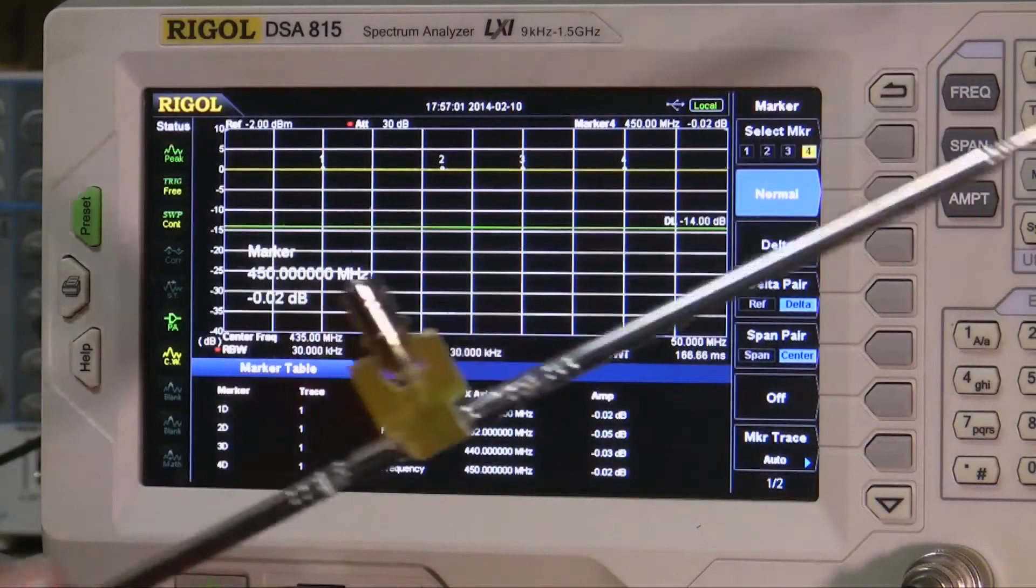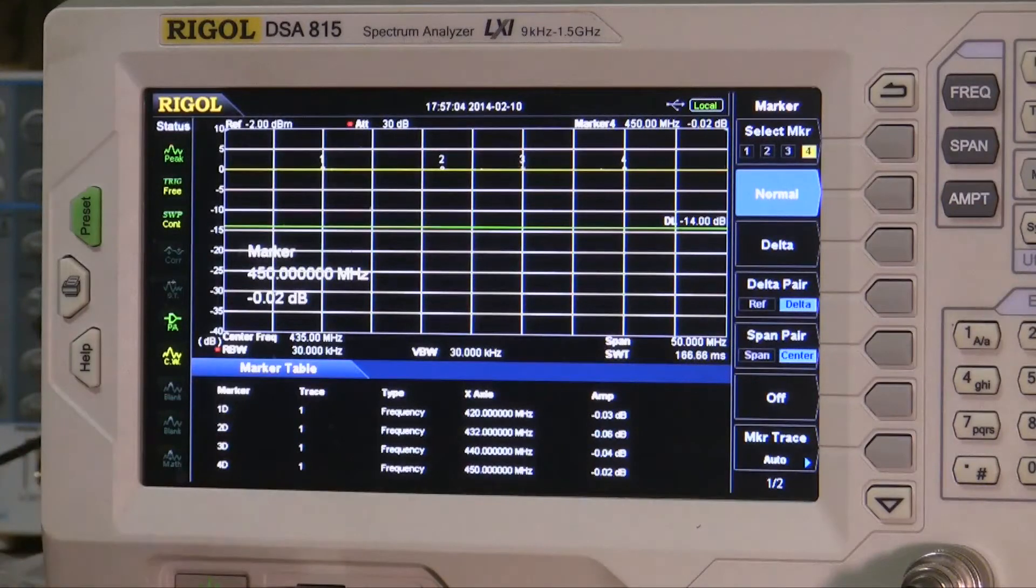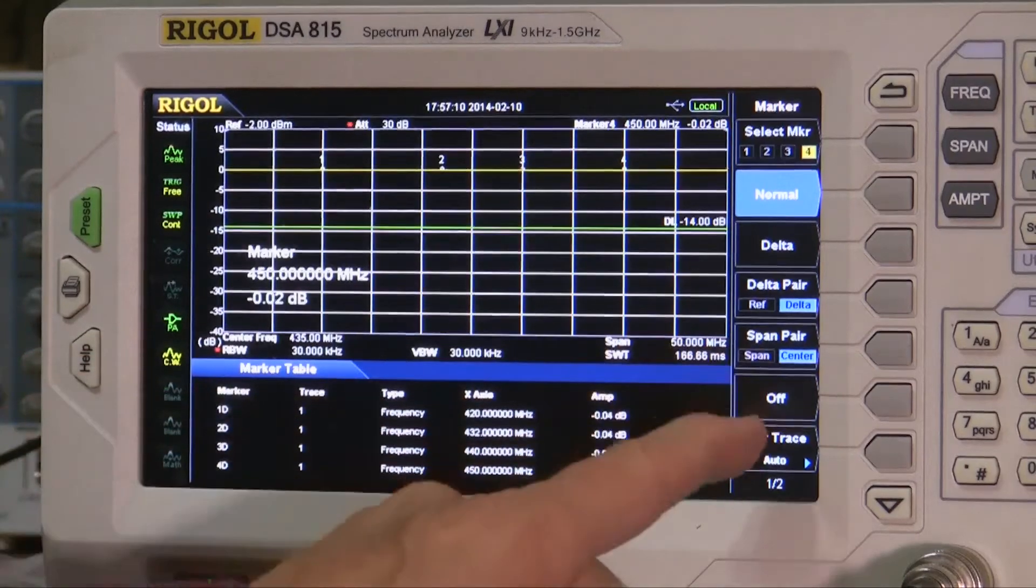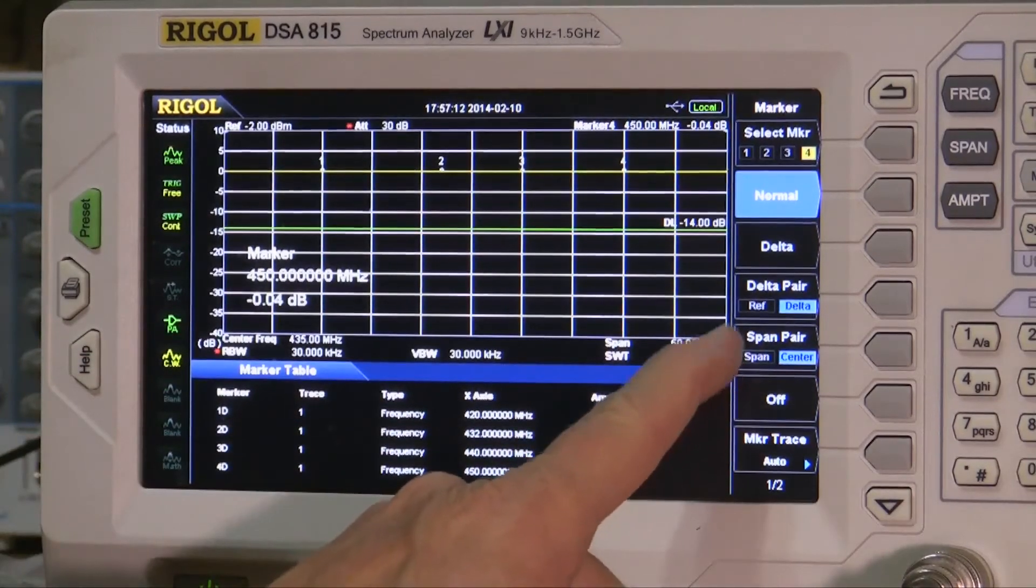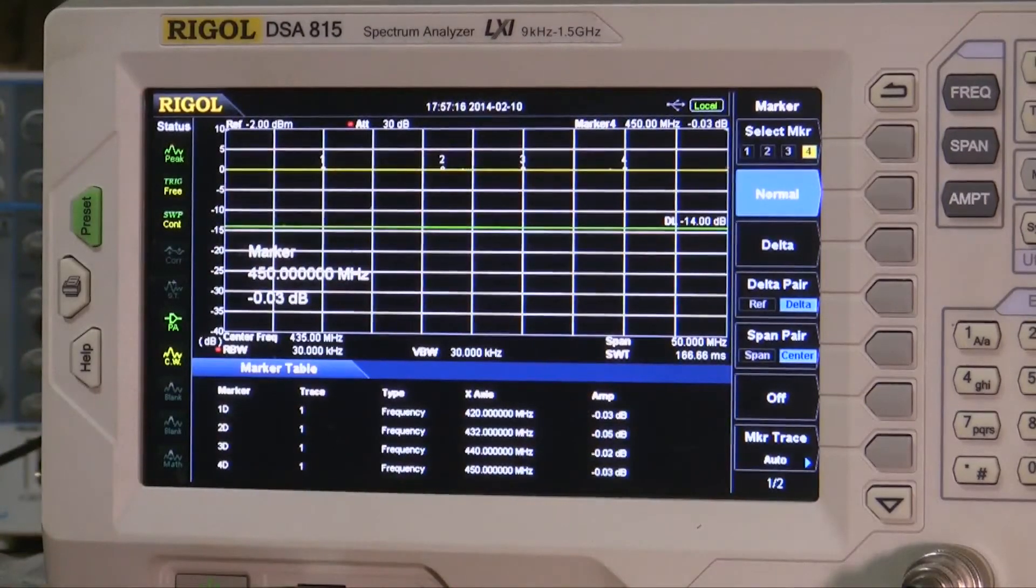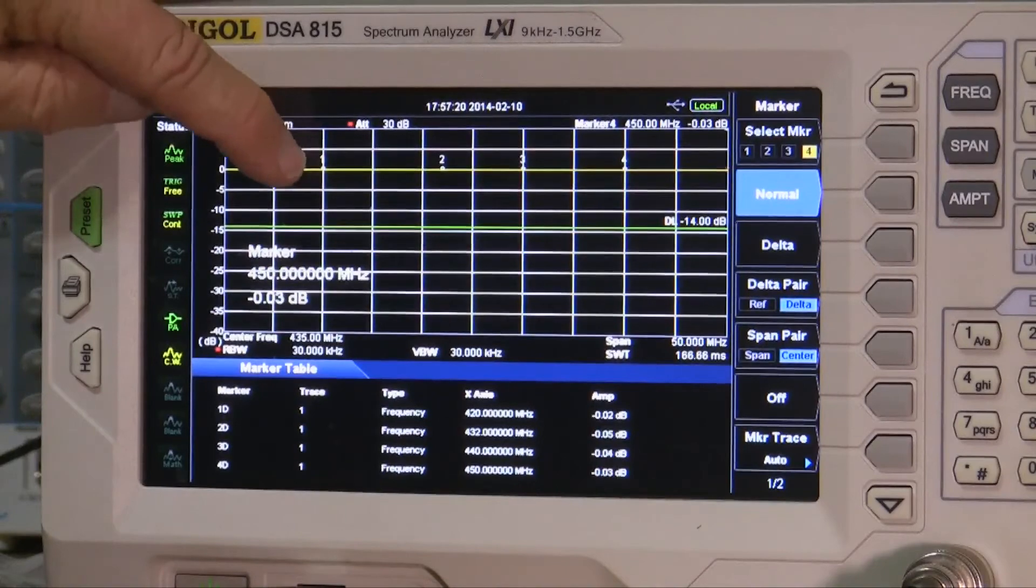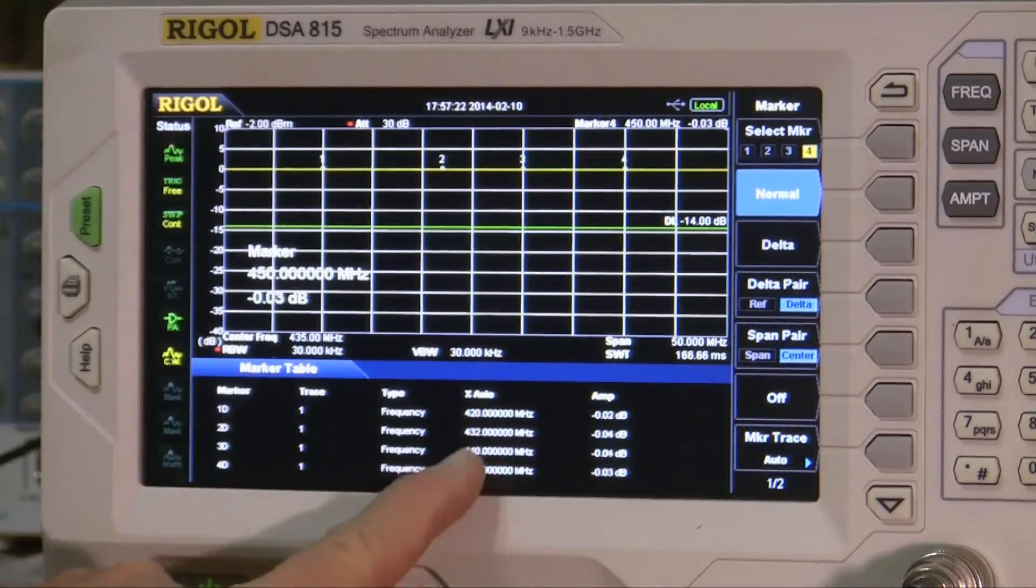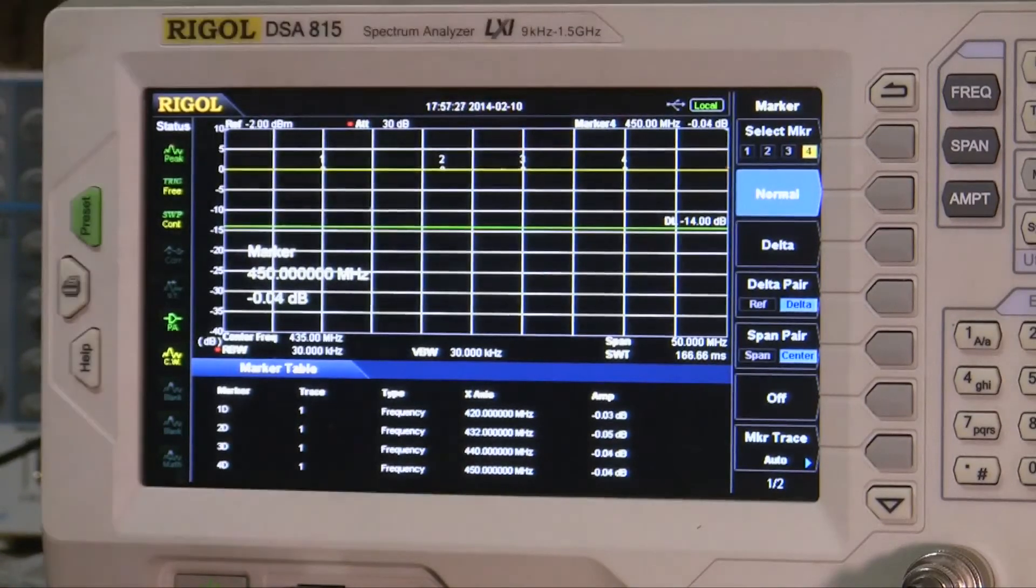I've got the antenna here. We've already set this up for sweeping from 410 to 460. And we've got markers on 420, 432, 440, and 450 here at 1, 2, 3, and 4. So we'll just put this thing on here.